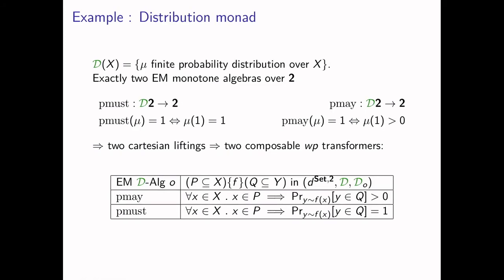This example can also be seen in the probabilistic setting. We have two algebras of the distribution monad: P-MUST and P-MAY. Probabilistic MAY interprets the Hoare triple PFQ as: if x satisfies P, then the output of the program on x satisfies Q with non-zero probability. The probabilistic MUST interpretation is that if the input satisfies P, then the output satisfies Q with probability 1.